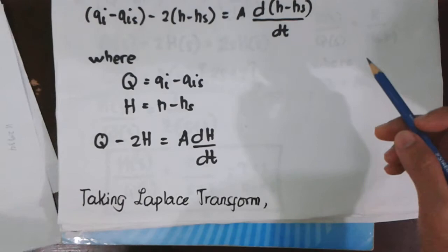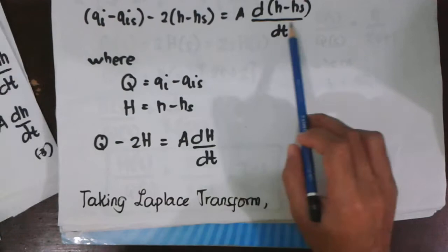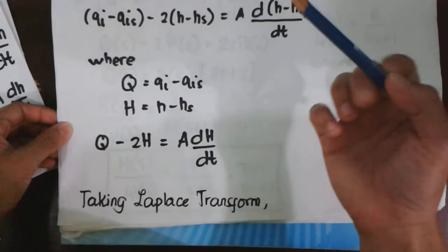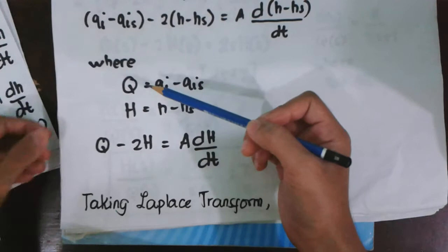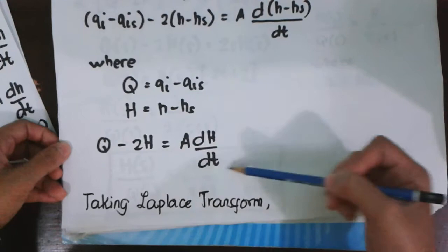And then, subtracting equation 4 with equation 3, we arrive at this equation. If we define deviation variables, we arrive at this form.